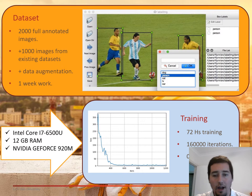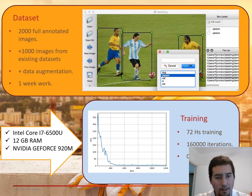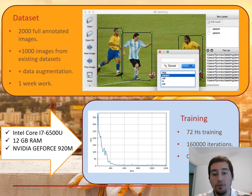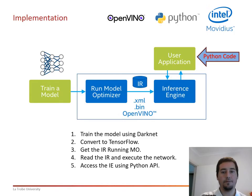I then started training, and the training took 72 hours on my computer — an Intel Core i7-6500U with 12 GB of RAM and an NVIDIA GeForce 928M GPU. I ran 160,000 iterations and achieved an average loss of approximately 1.55.